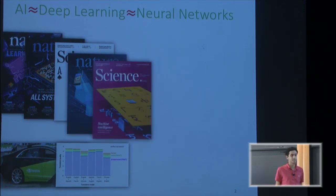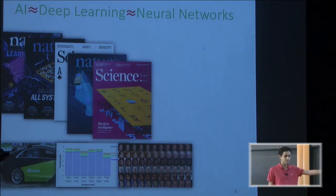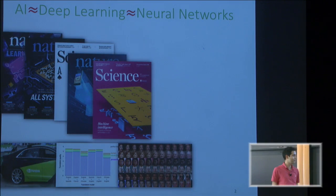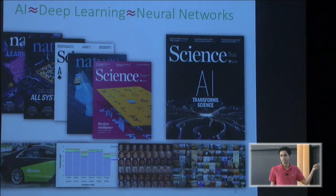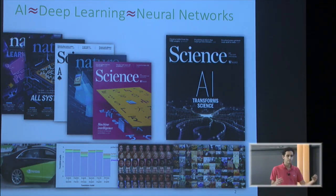Deep learning does well in translation, almost as good as a human — Google uses it in Google Translate. It can also be creative: generating handwriting characters you can't tell from real ones, generating faces of people who don't exist, or generating art. Recently, many people in other branches of science use it — in physics, chemistry, biology — to understand complicated systems they can't understand themselves.